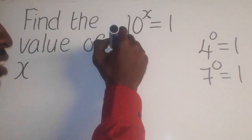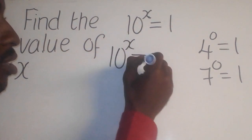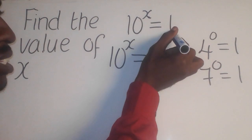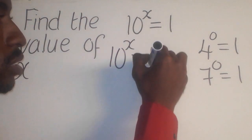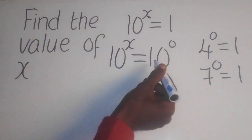So the way it is. It is 10, like this, to the power x, equal to this one. Now, we need to change this one to 10 to the power 0 there, so that we have the same base here.